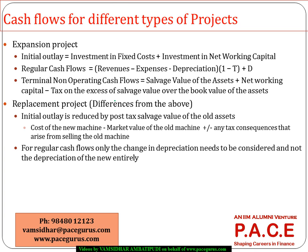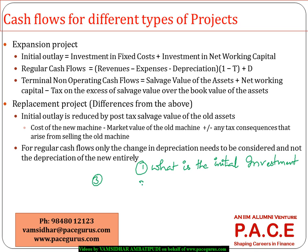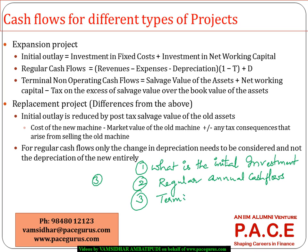Whenever we are trying to evaluate any capital project, we try to work out three different calculations. One: what is the initial outlay — how much did we really invest, or what is the initial investment in the project? Then, find out regular cash flows — annual, or whatever period we are looking at — the regular annual cash flows that we are going to get from the operations. And the third one is the terminal non-operating cash flow.